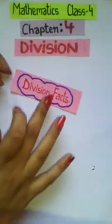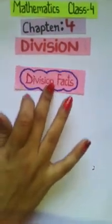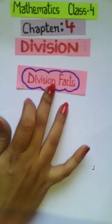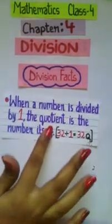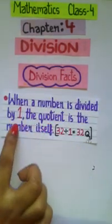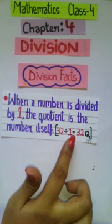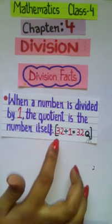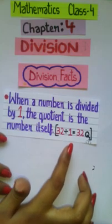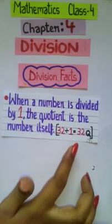Next I will be telling you all about some division facts that we need to keep in mind while doing division. Number 1: When a number is divided by 1, the quotient is the number itself. Example 32 divided by 1 equal to 32 being the quotient.